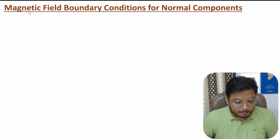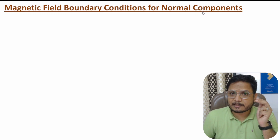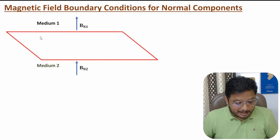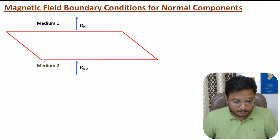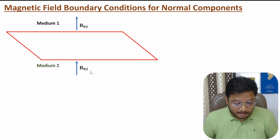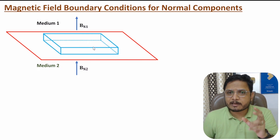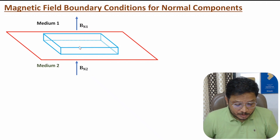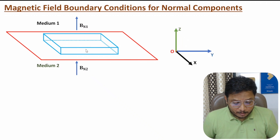Now I'll explain the calculation of magnetic boundary conditions for the normal component — establishing the relationship between normal components of magnetic field as it enters from one medium to the second. I am considering two separate mediums separated by a surface, drawn in three dimensions. This red-colored surface separates medium 1 and medium 2. I'll be considering a small differential volume with six different sides, shown larger here for calculation purposes.